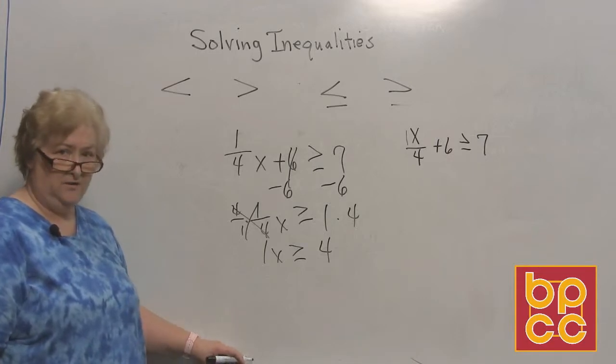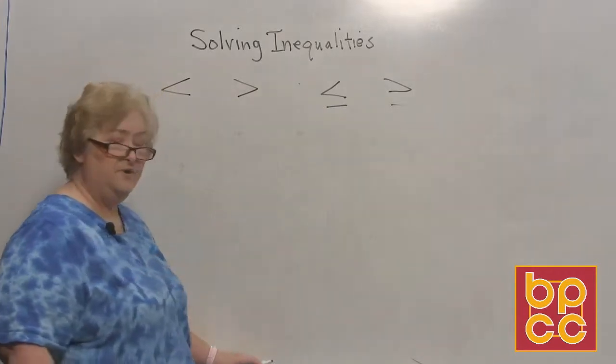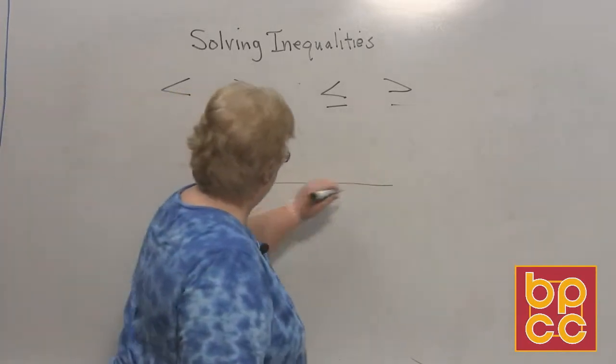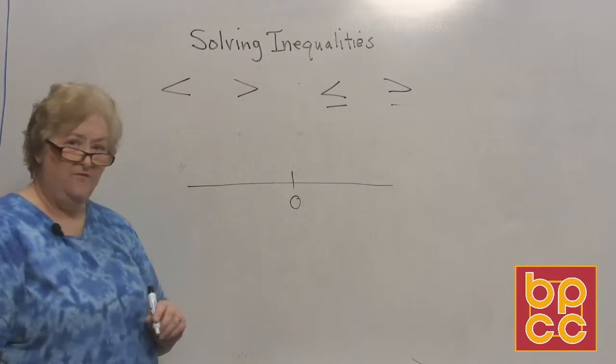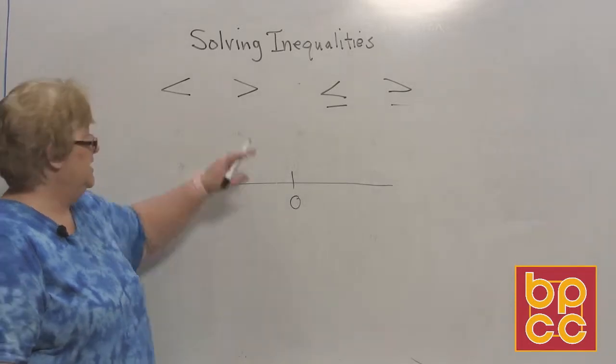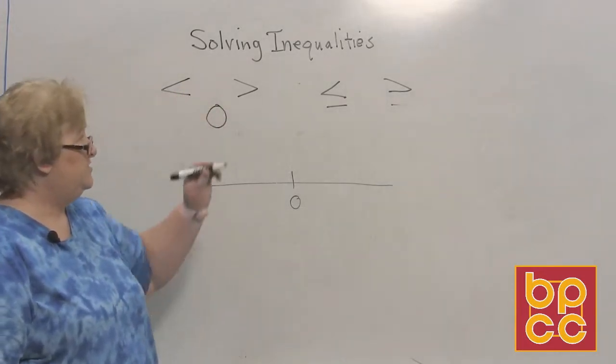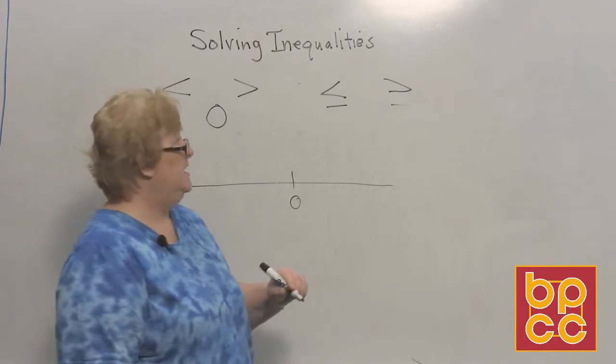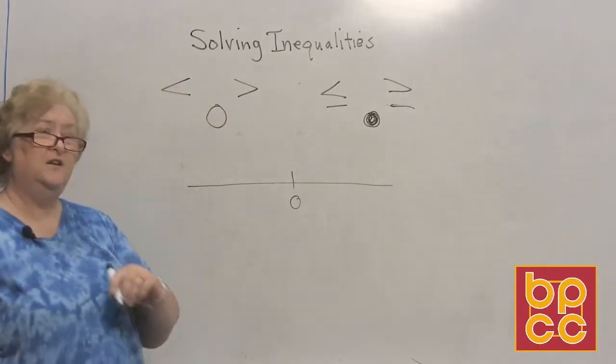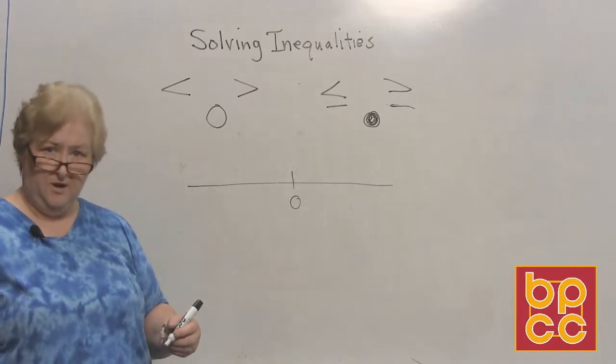Now, all of these inequalities that we have been solving can also be graphed. But this time, they're going to be graphed on a number line. And so, I want to give you some examples of that. I'll draw my little number line right here. When we graph on the number line, we're going to use an open circle and a closed circle to denote something. If we see the less than or greater than sign, the circle will be open. If we see less than, greater than or equal to, it's going to be a closed circle. So let's pretend that we've solved all those inequalities. We came down to the answer. And now, we want to graph that on the number line.